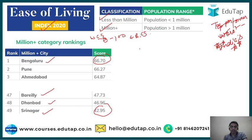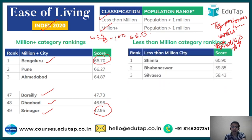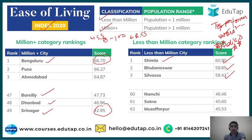Under the less-than-million category, the top performers are: Shimla on top with a score of 60.9, followed by Bhubaneswar with 59.85, and Silvassa in third place with 58.43. The worst performer is Muzaffarpur, which was at the bottom of the index with a score of 45.53.